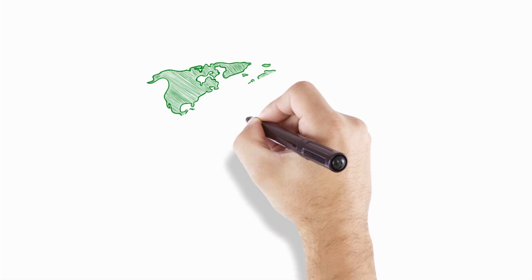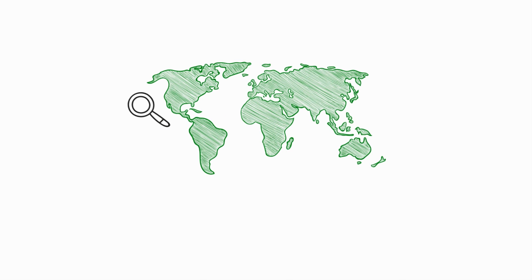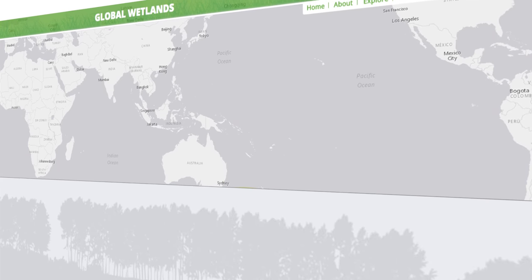But for such an important resource, not enough is known about where wetlands can be found or how much area they cover, particularly in the tropics. That's where the Global Wetlands Map comes in.